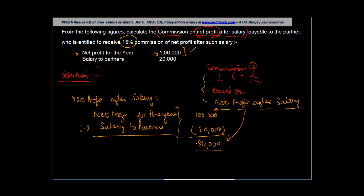Now, net profit after salary is $80,000. What is the partner entitled to? The partner is entitled to receive 15% commission of net profit after salary. In other words, the commission of the partner is equal to 15% of $80,000. Why? Because it is 15% commission of net profit after such salary.